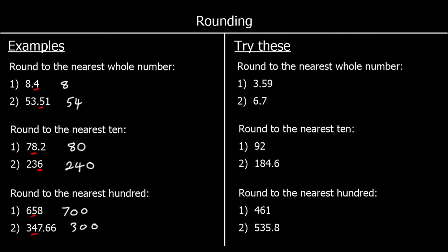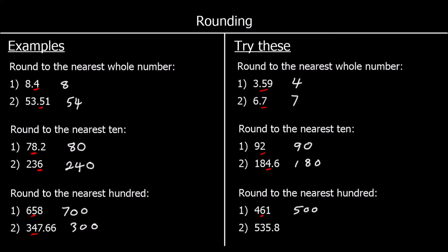Rounding to the nearest whole number: 3.59 is going to round up to 4, and 6.7 is going to round up to 7. And to the nearest 10: 92 is going to stay as 90, and 184.6 is going to stay as 180 to the nearest 10. And to the nearest 100: 461 is closer to 500 than 400, and 535.8 is closer to 500 than it is to 600.